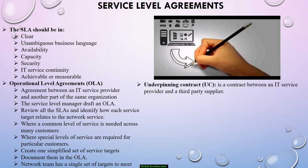According to ITIL, an Underpinning Contract, or UC, is a contract between an IT service provider and a third-party supplier. The third-party supplier provides goods or services that support delivery of an IT service to a customer. The UC defines targets and the responsibilities required to meet the agreed service level targets in the SLA. No real difference exists between a contract and an underpinning contract — the term simply reminds you that the contract must underpin the targets in your SLA. You negotiate and manage the contracts you have with your suppliers by using the supplier management process.